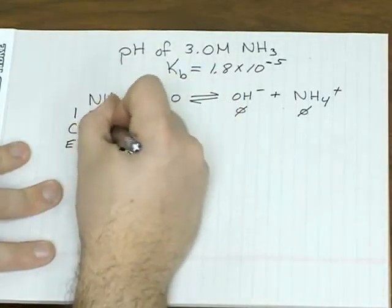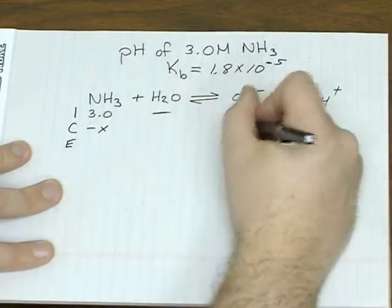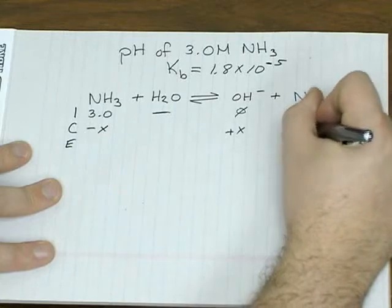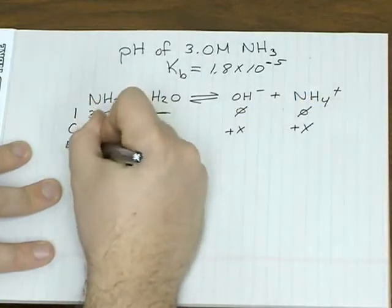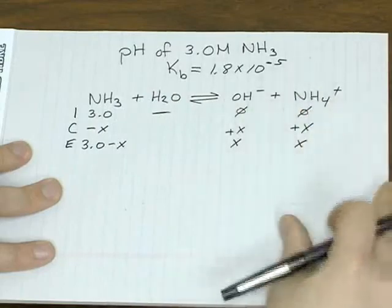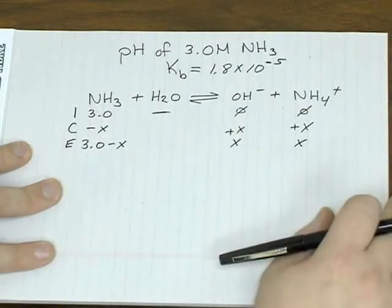So the change is going to be producing some of your hydroxide and ammonium. So you're going to lose x amount of ammonia, gain x amount of each product. So at equilibrium, we're going to have 3 minus x worth of ammonia, x amount of each product.